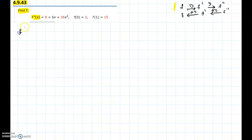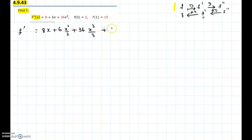First, let's find the anti-derivative of f double prime to get f prime. The anti-derivative of the constant 8 is 8x. The anti-derivative of 6x: by the power rule, it is 6 times x squared over 2. The anti-derivative of 36x squared is 36 times x cubed over 3. Don't forget the constant of integration. Reducing, f prime equals 8x plus 3x squared plus 12x cubed plus C.